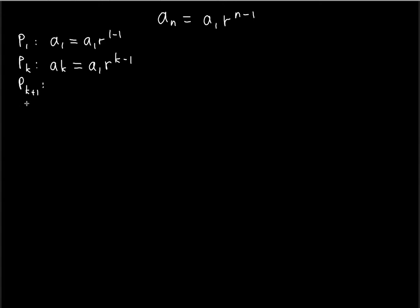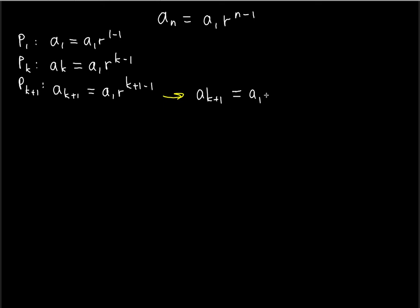The Pk+1 statement says that a_{k+1} — where k+1 substitutes n — is equal to a_1 times r to the power of k+1 minus 1. We can finish writing and simplify it: a_{k+1} should equal a_1 times r to the k, because plus 1 minus 1 is 0, so you're just left with k in the power.